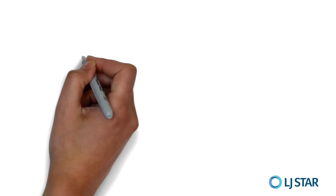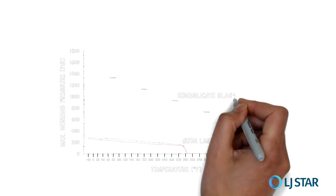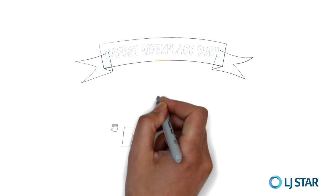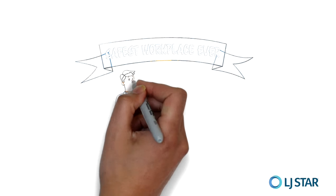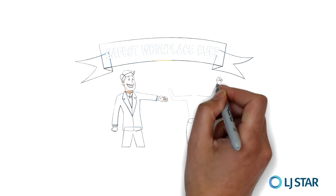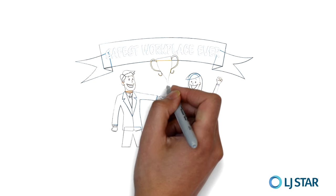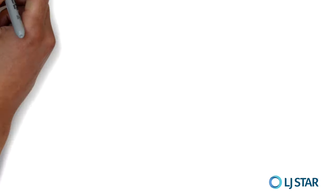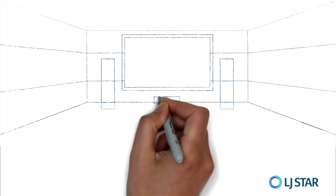There are other factors to consider: abrasion, corrosion, impact resistance. But here's what you need to remember — at higher temperatures and pressures, borosilicate glass will always outperform glass with any presence of soda lime, at every point on this chart. If soda lime isn't safe enough to go into your oven, why should you risk your industrial process and people to a site window with soda lime?